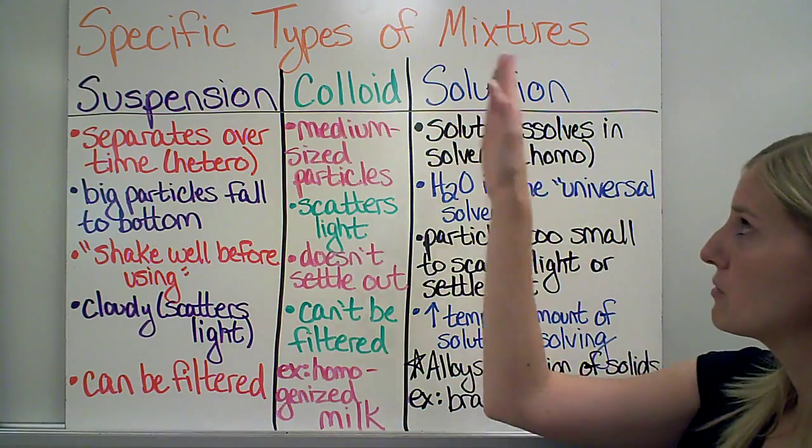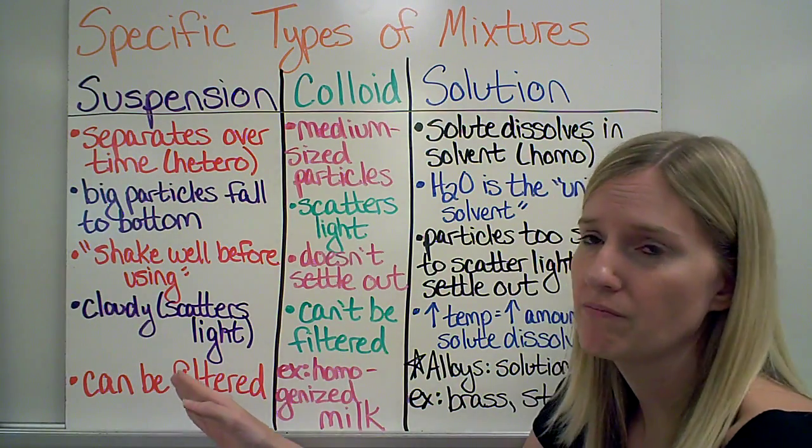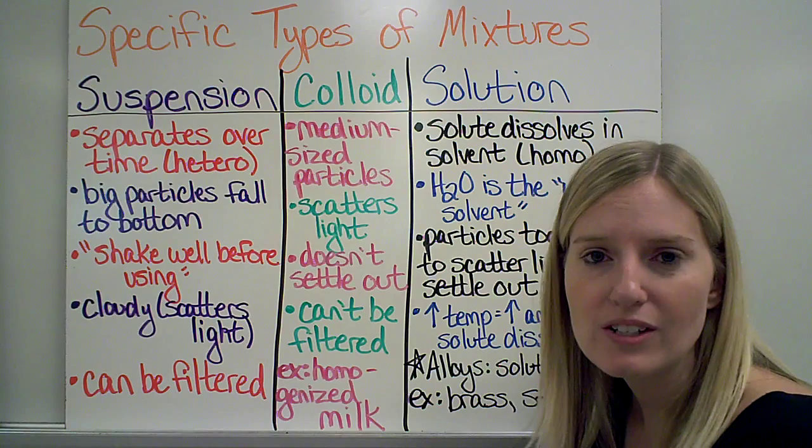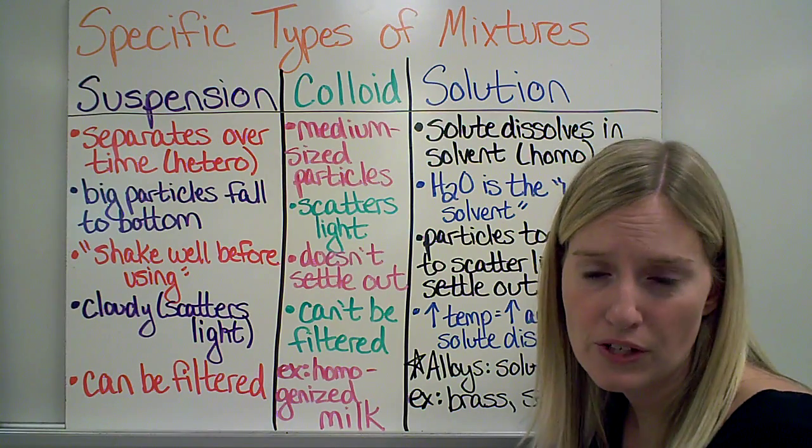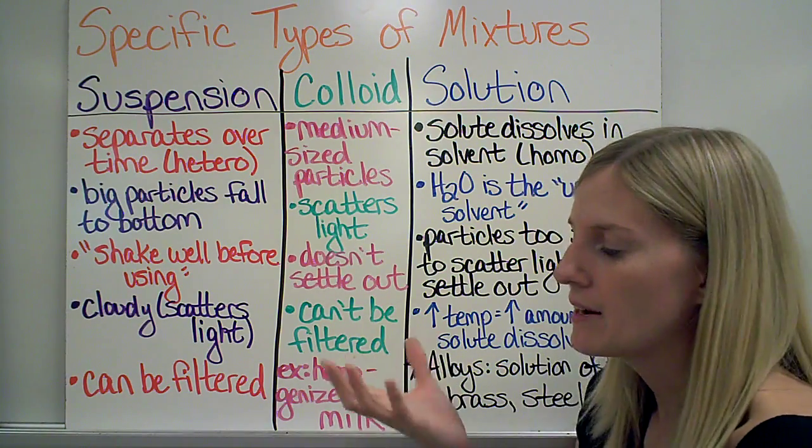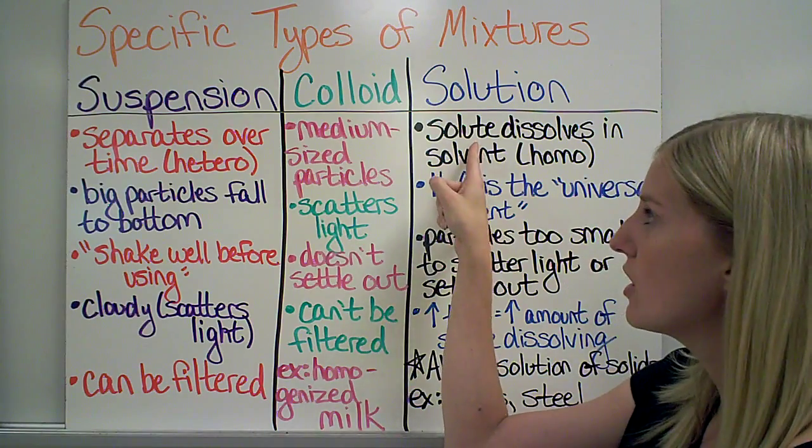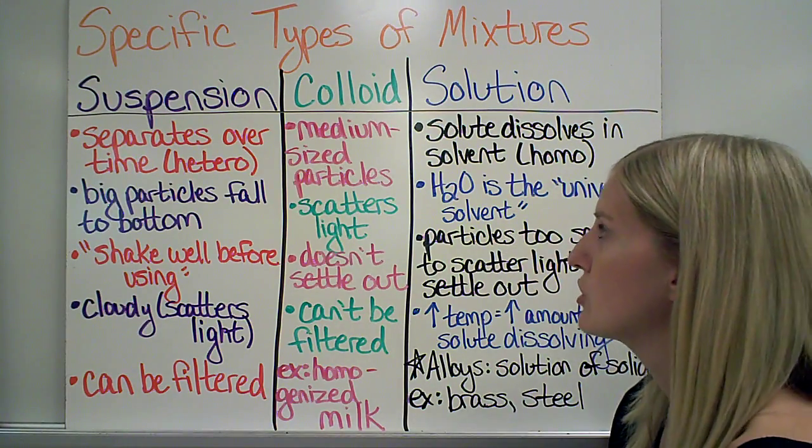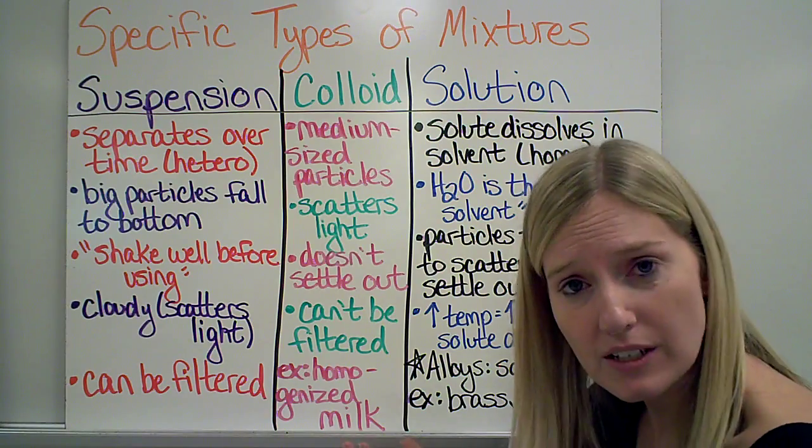On the opposite end of the spectrum here, I have solutions. Solutions are going to basically be the opposite of a suspension. So what I have in a solution is I have a solute dissolving in a solvent. The solute is whatever you are dissolving and the solvent is what does the dissolving. So let's say that I'm making Kool-Aid, for example, and I put my Kool-Aid powder that has the sugar in it already. And I'm going to put that into the water. Well, the Kool-Aid powder is what is being dissolved. So that would be the solute. The solvent would be the water because that's what's doing the dissolving. This is a homogeneous mixture because at the end I can't see the individual sugar particles anymore, for example, because they've dissolved.